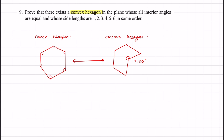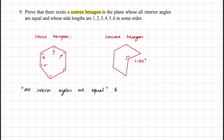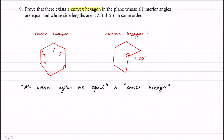We want a convex hexagon where all interior angles are equal. By definition, each of the angles inside a convex hexagon with equal interior angles must be 120 degrees, or two pi over three. That follows from simple geometry of convex hexagons.